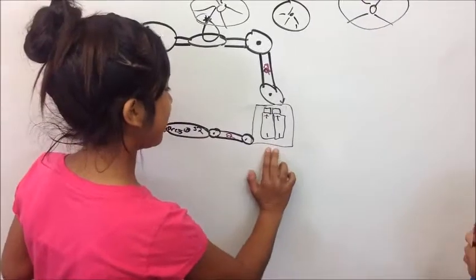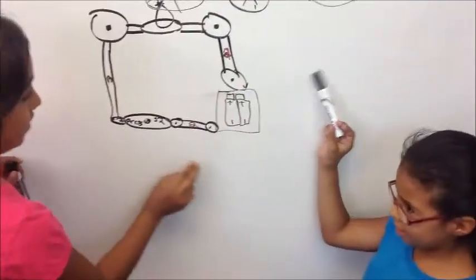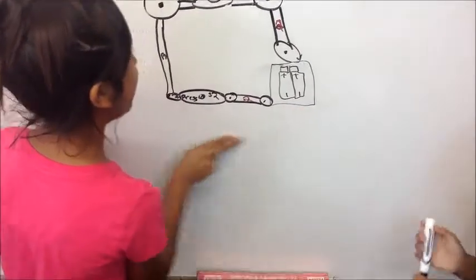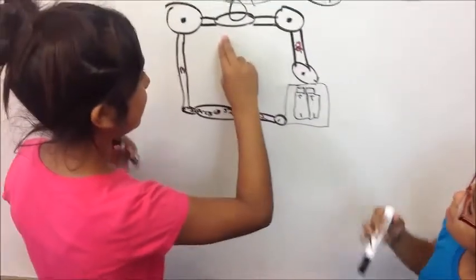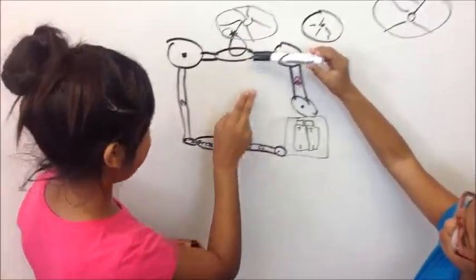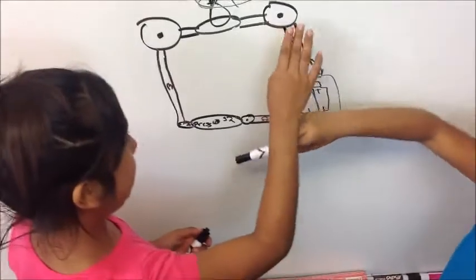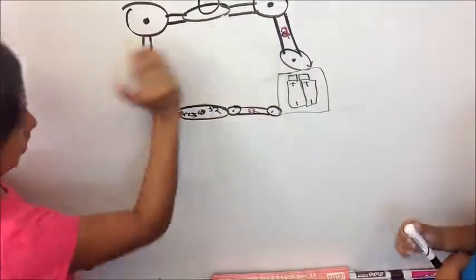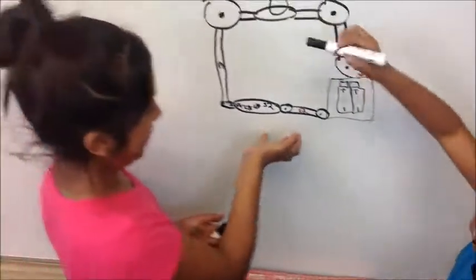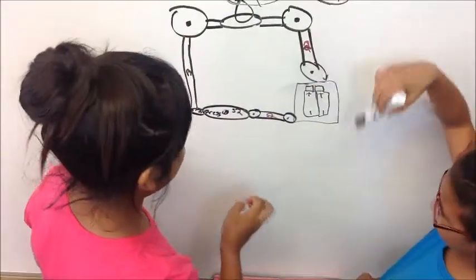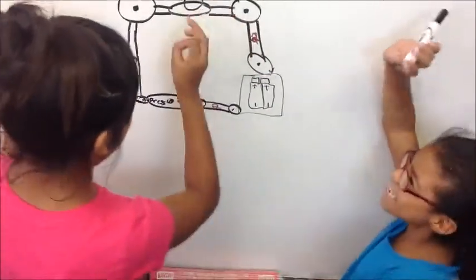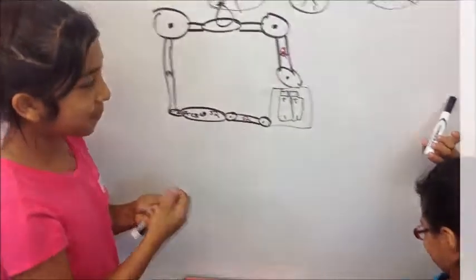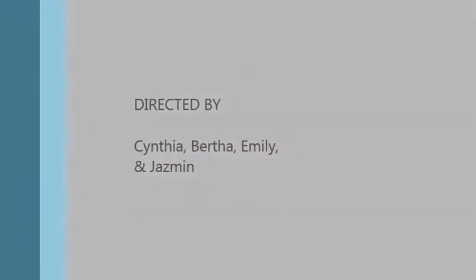The electric current is right here in the batteries and travels to the motor so the motor can move. And the circuit, this is holding because it's a circle and it goes around and around the electrical current. Thank you.